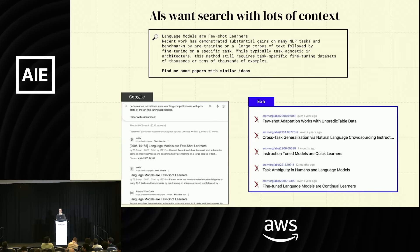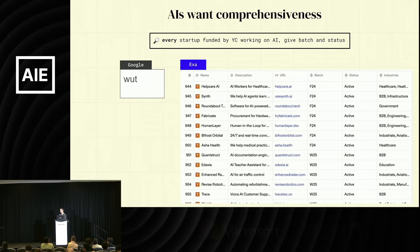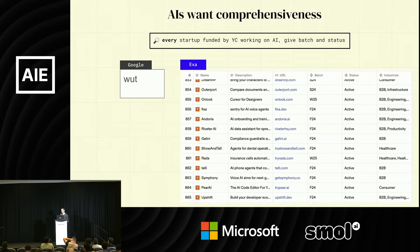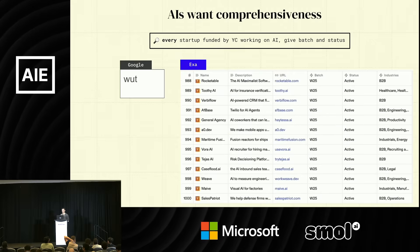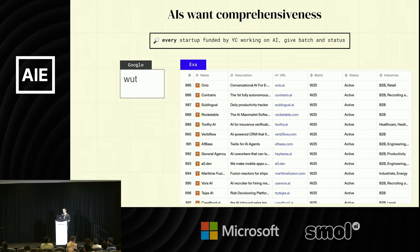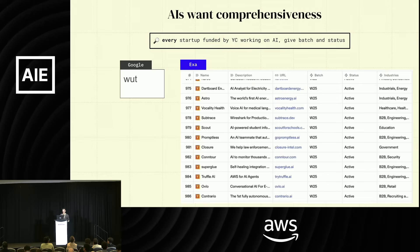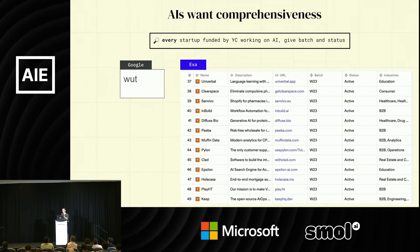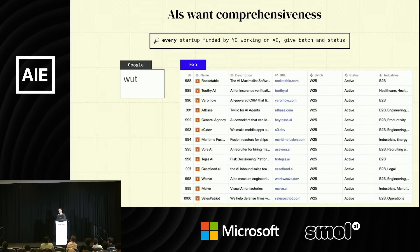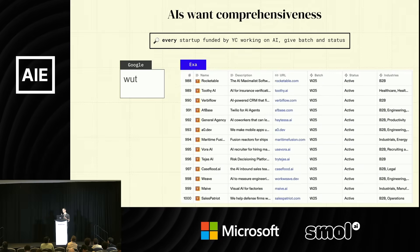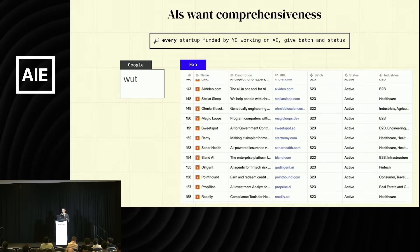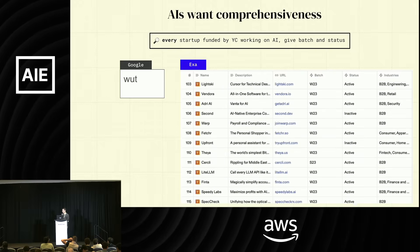Google has a few dozen keyword limit, whereas Exa can handle multiple paragraphs of text. Another big difference is AIs want comprehensive knowledge. If you give a human 10,000 links it doesn't know what to do — it would take 10 days. But AIs can do it in three seconds if parallelized. If I'm a VC and want a report on all companies in a space, I want literally all of them. There's huge value in getting truly all of them, not just the 10 or 20 Google finds. You need a search engine that can return 1,000 or 10,000 results, with semantic ability so when you say 'every startup funded by YC working on AI' you actually get all of them.